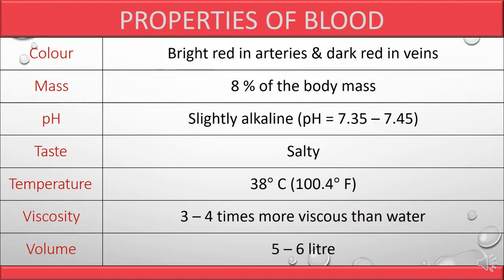The properties of blood: blood is slightly alkaline in nature and red in color because of hemoglobin, a respiratory pigment present in RBCs. In arteries the blood is bright red, whereas in veins it is dark red. Blood constitutes about 8% of total body mass, has a salty taste, a normal temperature of 38°C, and is 3 to 4 times more viscous than water. In an adult healthy person, the volume of blood is 5 to 6 liters.